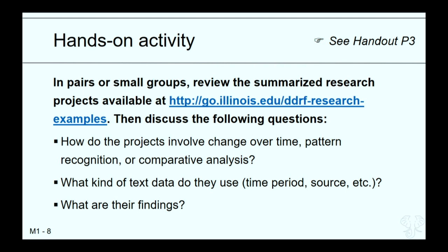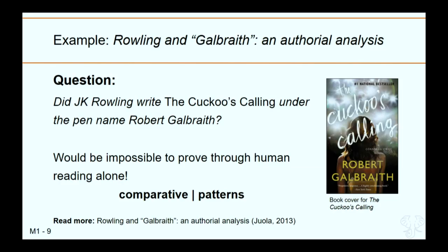Let's look at some real-world examples. The first is a well-known example using a method called stylometry. When 'The Cuckoo's Calling' by Robert Galbraith was published in 2013, people wondered if the book was actually written by J.K. Rowling. The research question: did J.K. Rowling write 'The Cuckoo's Calling' under the pen name Robert Galbraith? That's impossible to prove just by reading the book. It involves comparative analysis — comparing 'The Cuckoo's Calling' with other books by J.K. Rowling and recognizing patterns between her writing and the writing in 'The Cuckoo's Calling.'